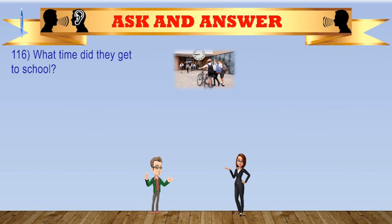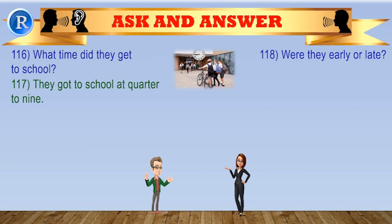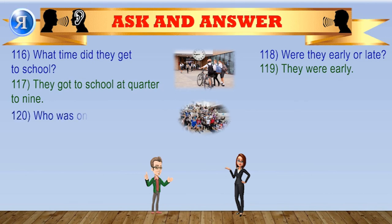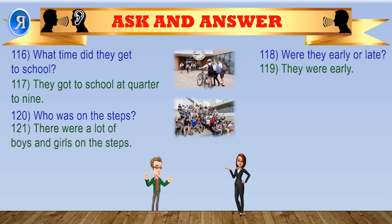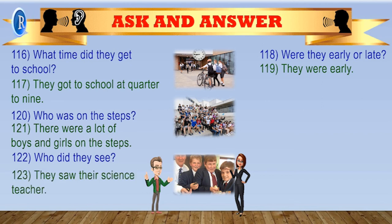What time did they get to school? They got to school at quarter to nine. Were they early or late? They were early. Who was on the steps? There were a lot of boys and girls on the steps. Who did they see? They saw their science teacher.